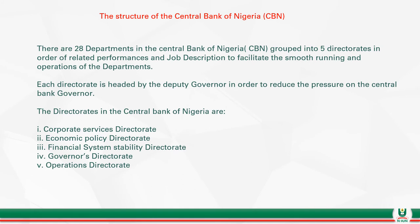The structure of the Central Bank of Nigeria was put in place to enable the bank to function well and meet its mandates. The CBN has 28 departments grouped into five directorates: corporate services directorate, economic policy directorate, financial system stability directorate, governor's directorate, and operations directorate. Each directorate is headed by a deputy governor to reduce pressure on the central bank governor.